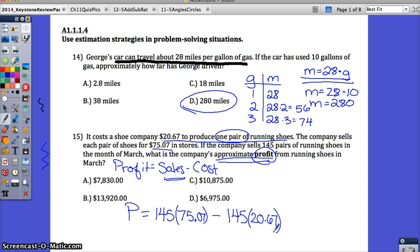Use your calculator here, and let's multiply this. 145 times 75.07 gives me $10,885.15. That's how much they have coming in from the sales. But we need to take away how much it costs them to make these shoes, which is 145 times 20.67. We're taking away $2,997.15. Then subtract this. This is going to be your profit. $10,885.15 minus $2,997.15 gives me $7,888.